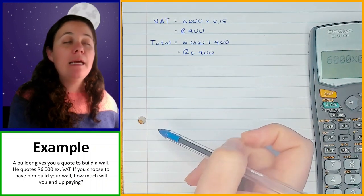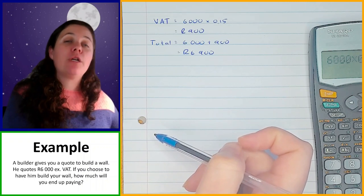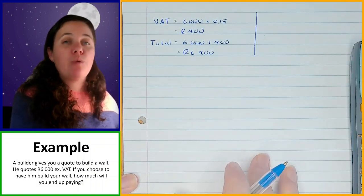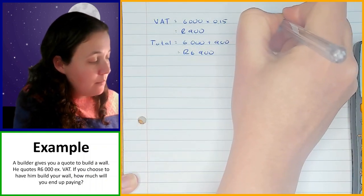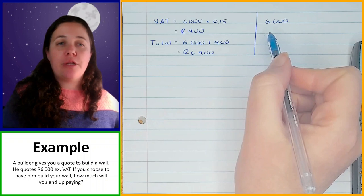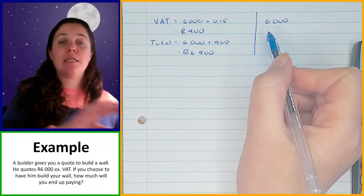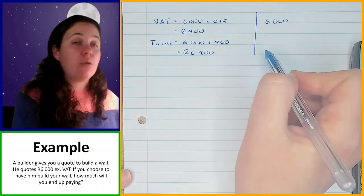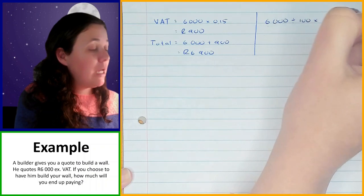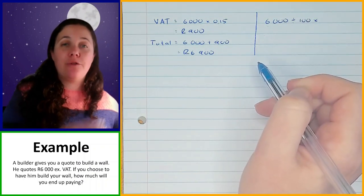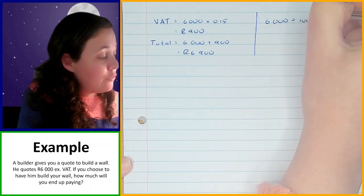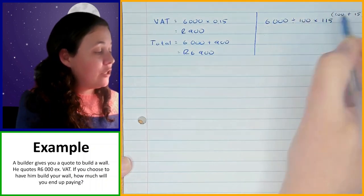That method works perfectly fine if you are starting with a price ex VAT. But if you're starting with a price inclusive of VAT, it becomes more complicated. So I also want you to know the other method, where we take the amount we know, which is 6,000. The price ex VAT is always 100% because that is the amount the seller is wanting to get. So the 6,000 is 100%. We divide by what we have, which is 100%, and multiply by what we want. If you take 100% and add the 15% VAT, you end up with 115%. So we multiply by 115 — that's 100 plus 15.